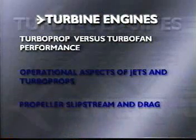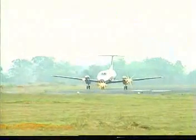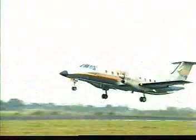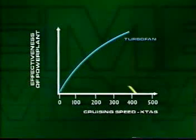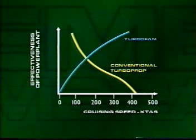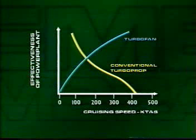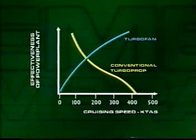Turboprop versus turbofan performance: because of the propeller reduction gearing and the intricate propeller governing feature, the turboprop engine is heavier and more complicated than a turbofan engine of equivalent power. However, the turboprop's performance during takeoff and climb is remarkably greater than the turbofan's, due to the propeller's ability to accelerate a large mass of air at low flight speeds. The propulsive efficiency of the conventional turboprop decreases substantially above 300 knots true airspeed and is essentially null around 400 knots, while the turbofan produces power efficiently up to and above supersonic speeds. This explains why propellers were largely offset by the introduction of turbofan engines.